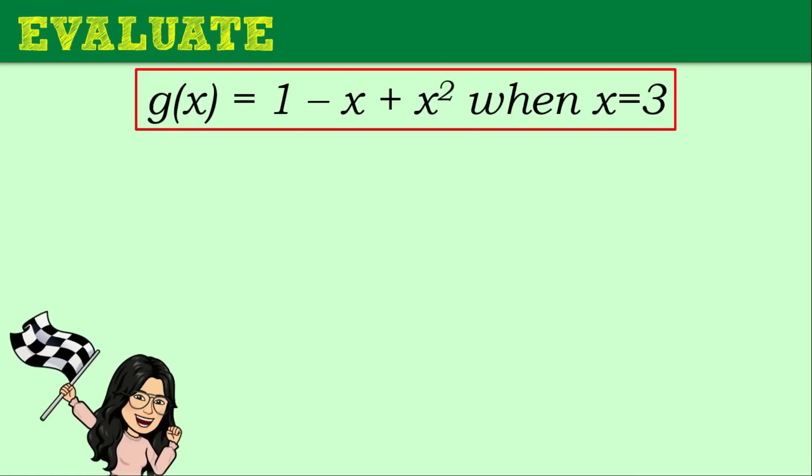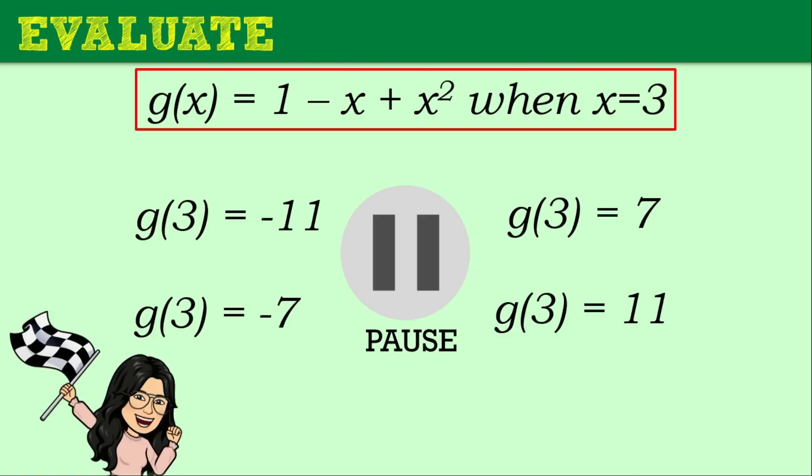Let's have another example. Evaluate the given function: g of x is equal to 1 minus x plus x squared when x is equal to 3. The choices are: g of 3 equals negative 11, negative 7, 7, or 11. You may pause this video and answer the question. The answer is g of 3 is equal to 7. If you got the right answer, congratulations for doing a job well done.